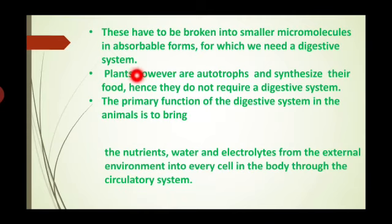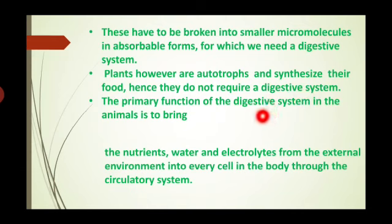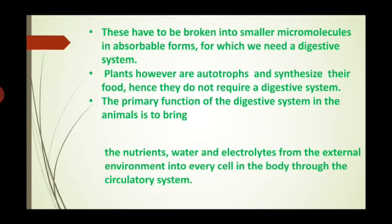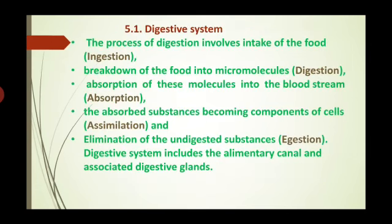Plants are autotrophs — they synthesize their own food and don't require a digestive system. Comparing to animals, plants produce food by themselves. The primary function of the digestive system in animals is to bring nutrients — carbohydrates, water, electrolytes — from the external environment to every cell in the body through the circulatory system.